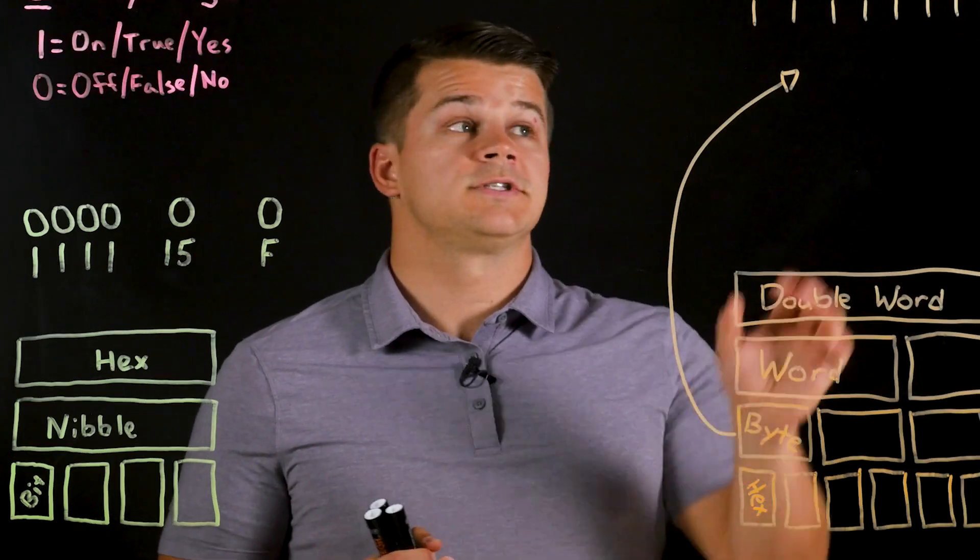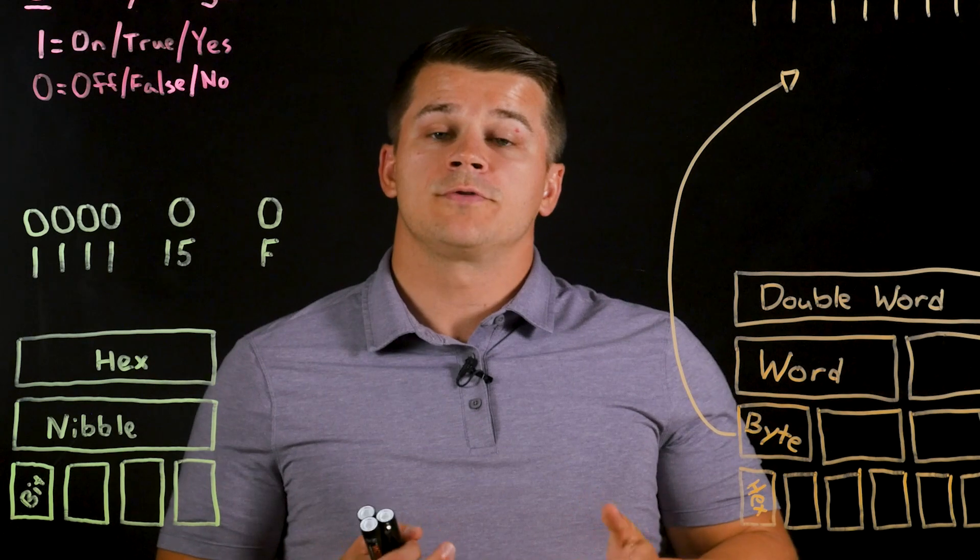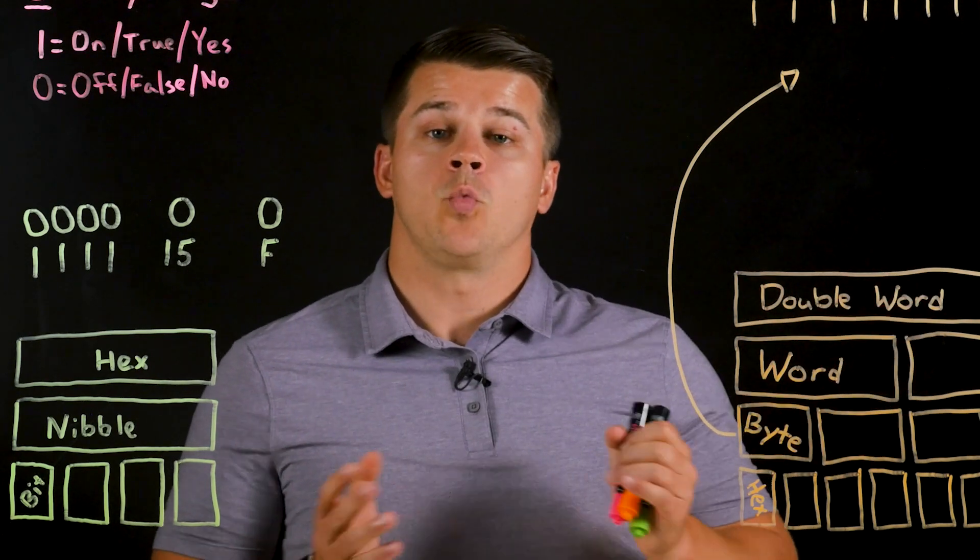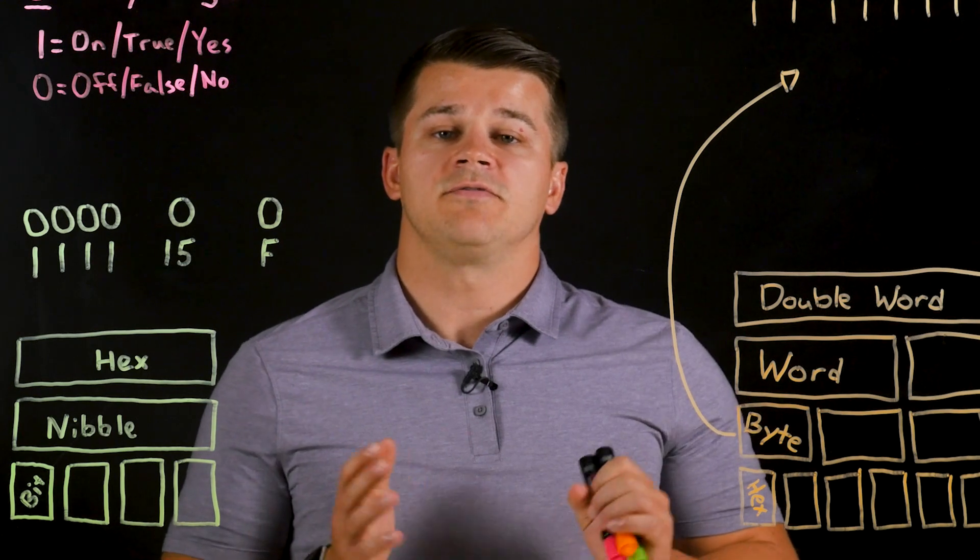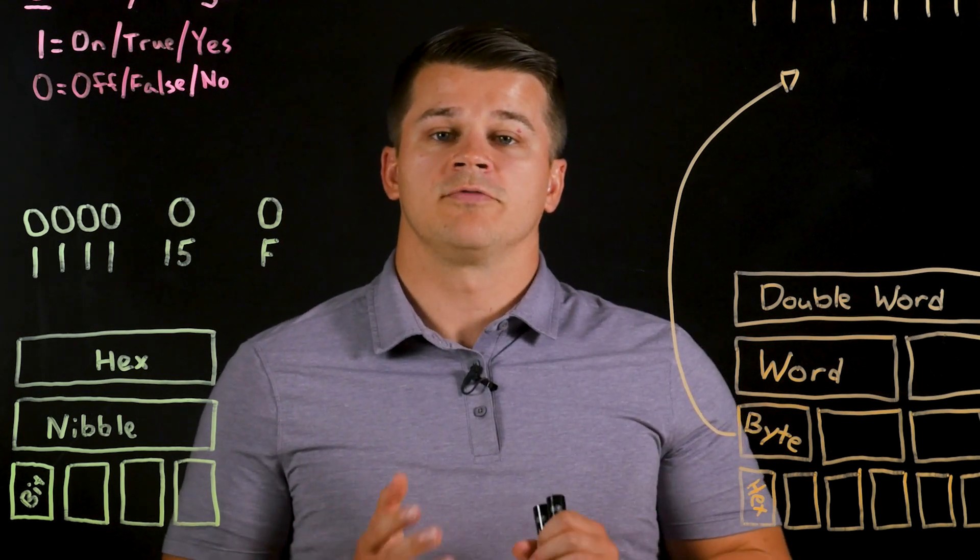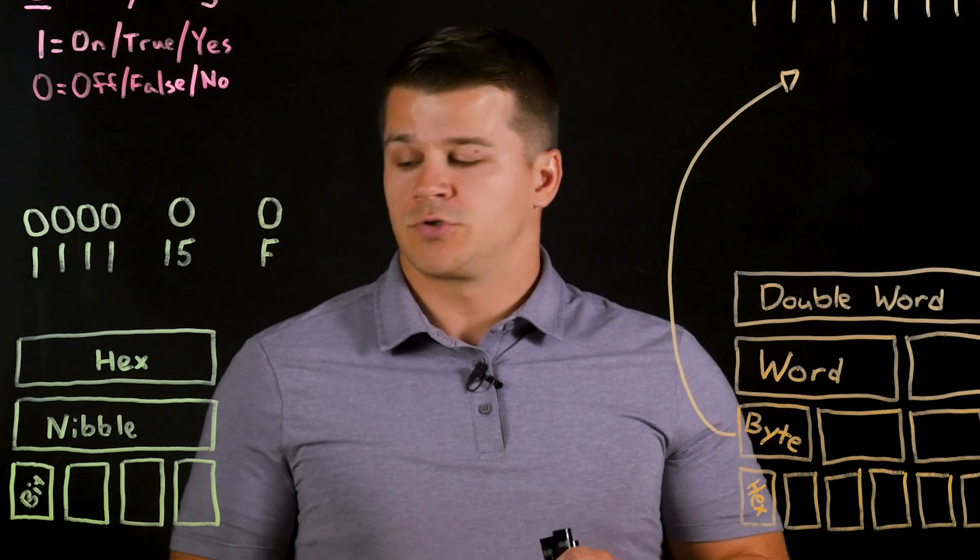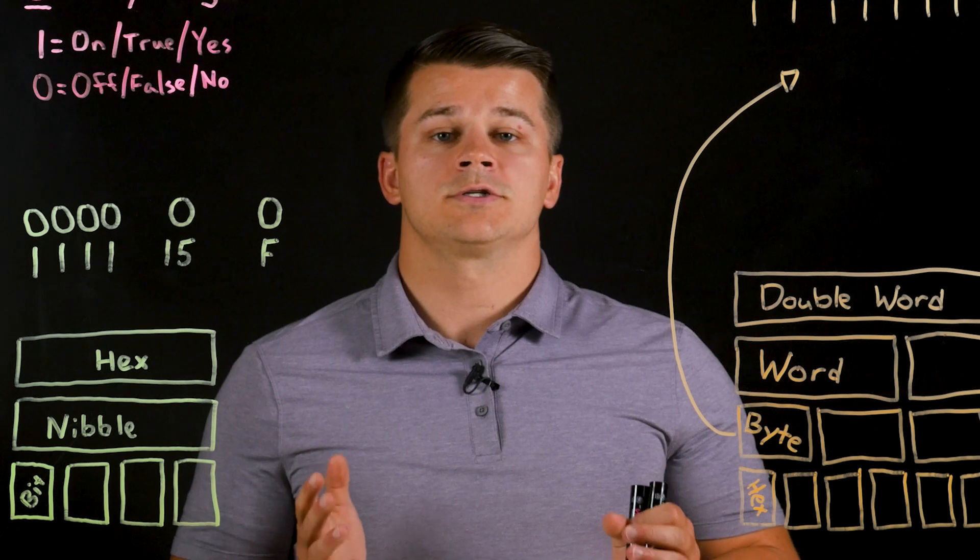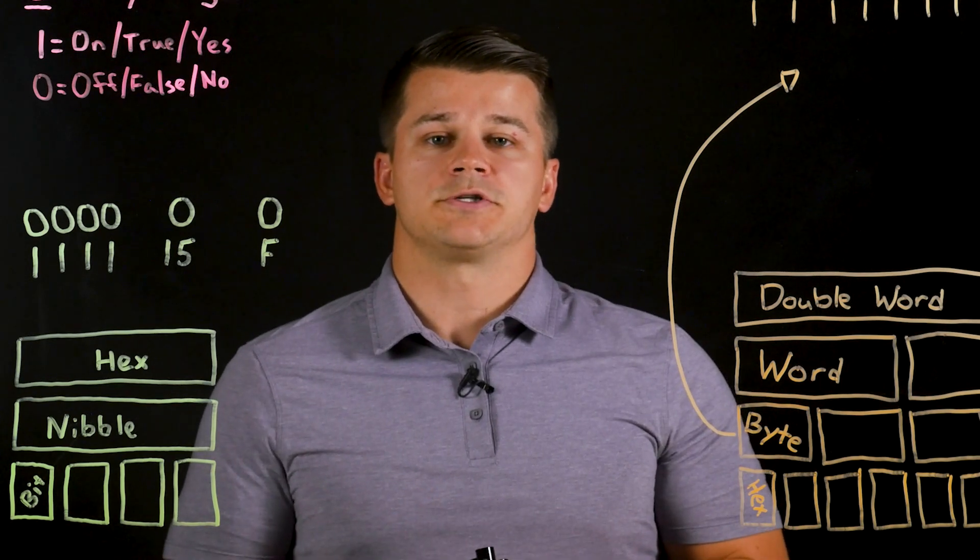So now that we've looked at the different value combinations for the byte, those are then grouped together for even larger words and double words. So the word has 65,536 different combinations while the double word is over 4.2 billion. So these little zeros and ones of the bits can be combined together for very large data types for complex communication.